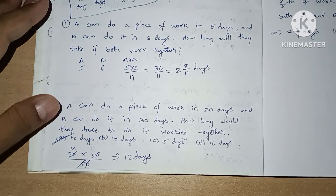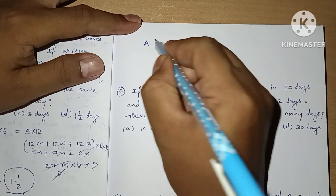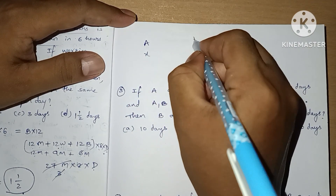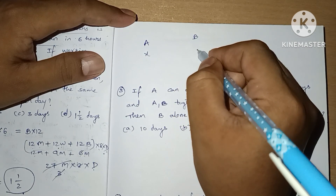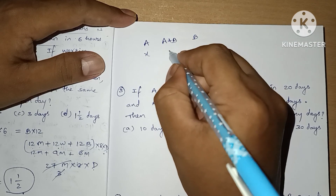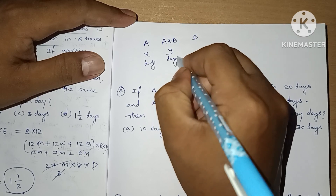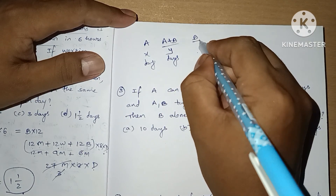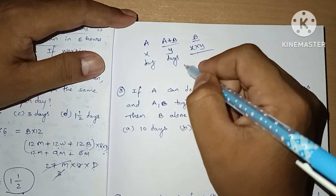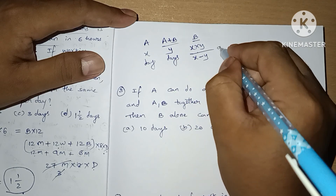Now we are going to see one more topic. If person A can do a piece of work in X days, and we don't know how many days B takes, but we know A and B together can complete the whole work in Y days — to find B alone, the formula is X × Y divided by X minus Y days.